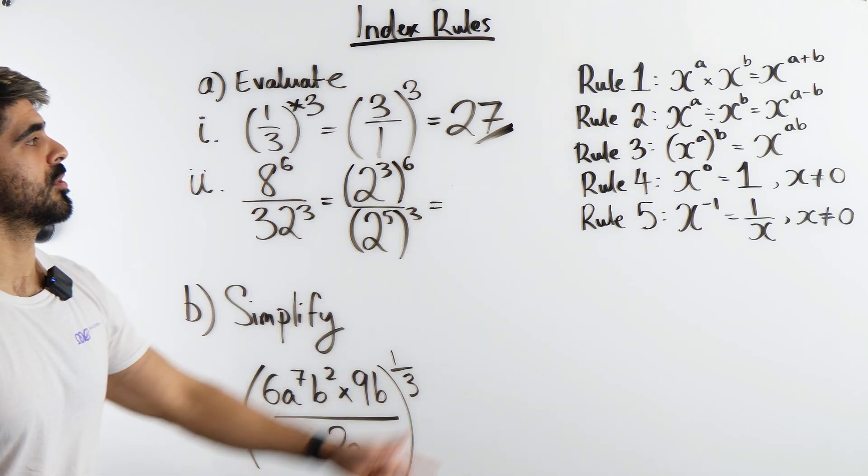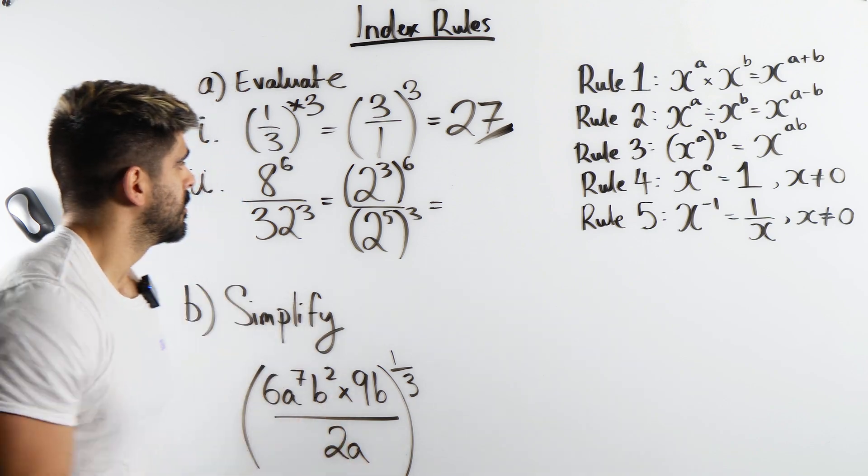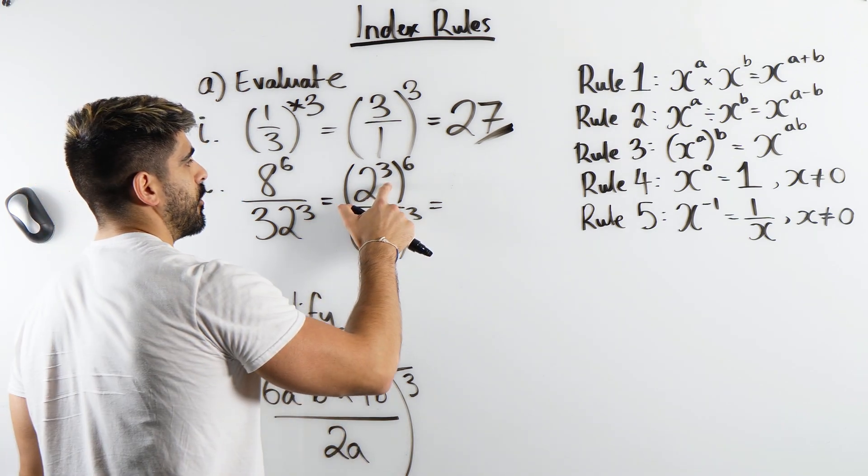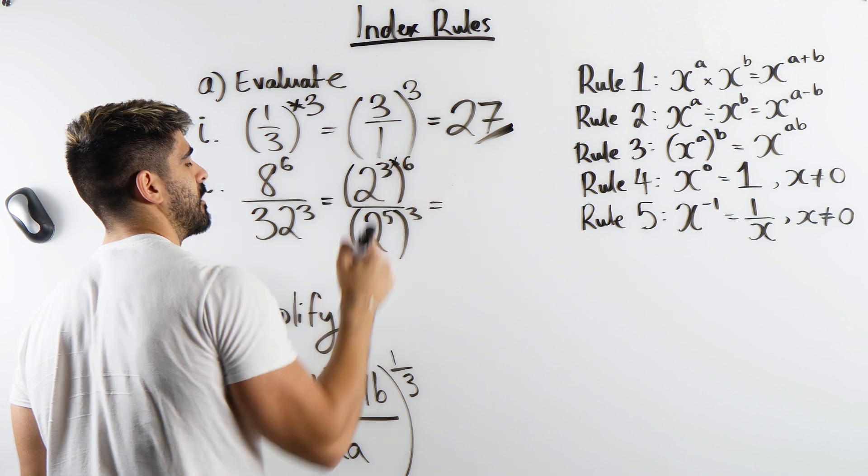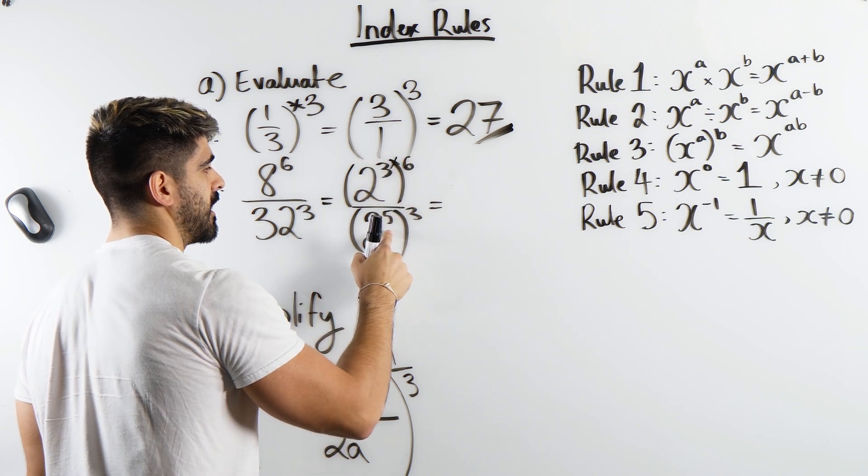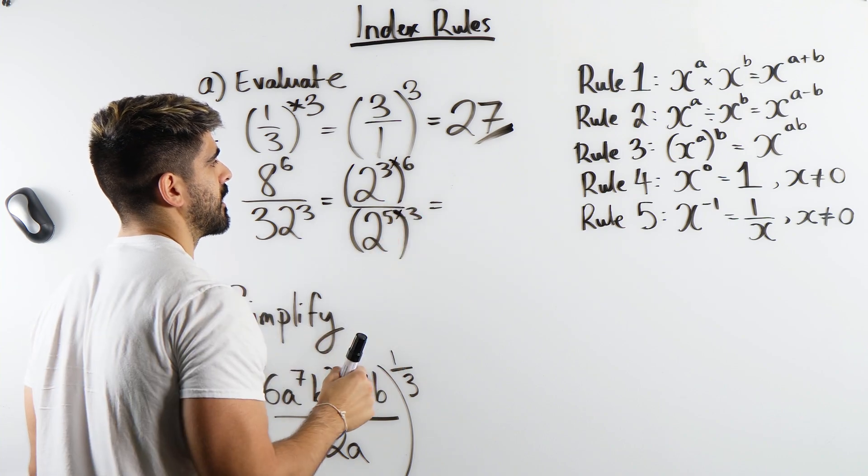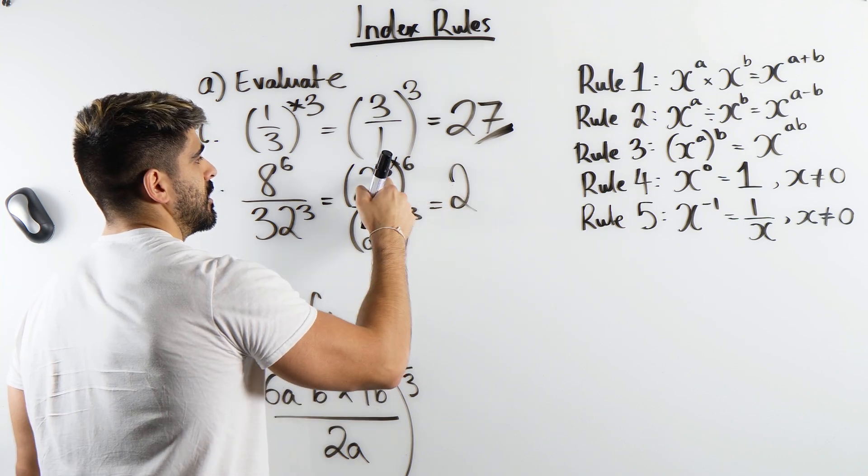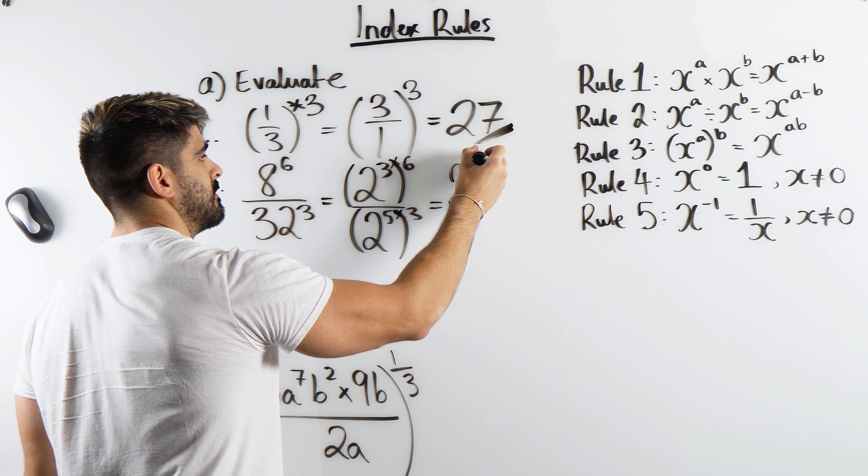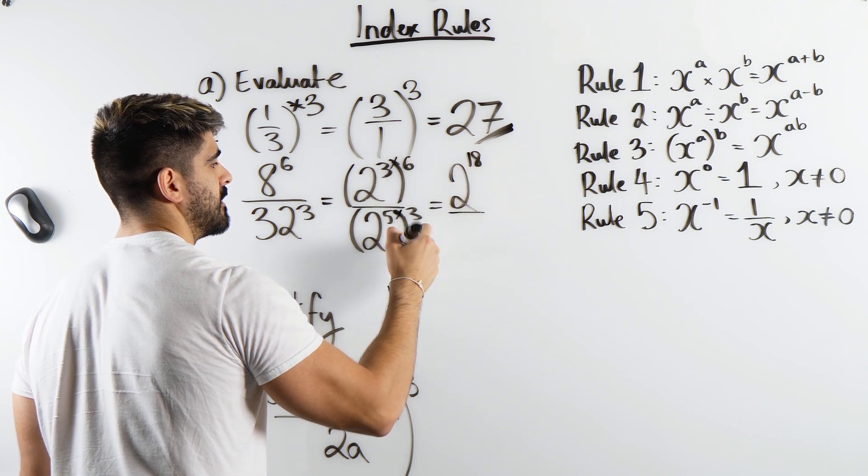Now we're using rule 3. When you take a number raised to a power raised to another power, we multiply the powers, and same thing here. 2 to the power of 5 raised to the power of 3, we multiply them. Alright, 3 times 6 is 18 divided by 5 times 3 is 15.